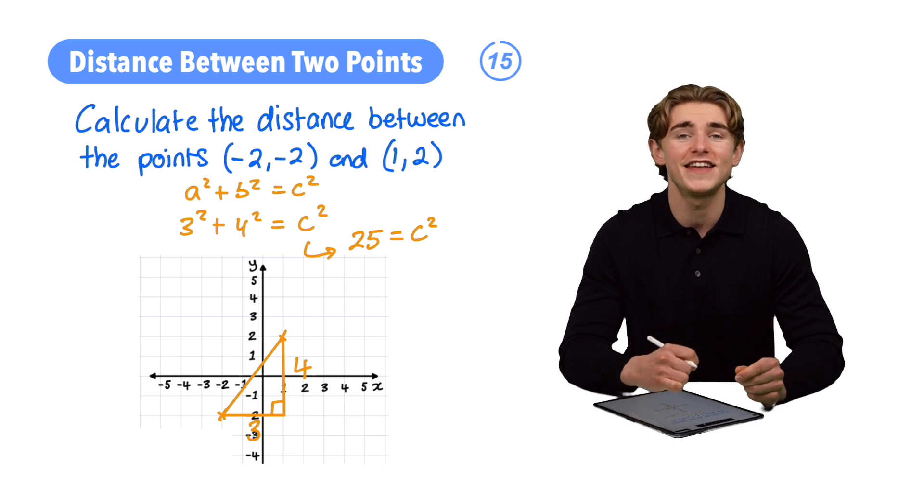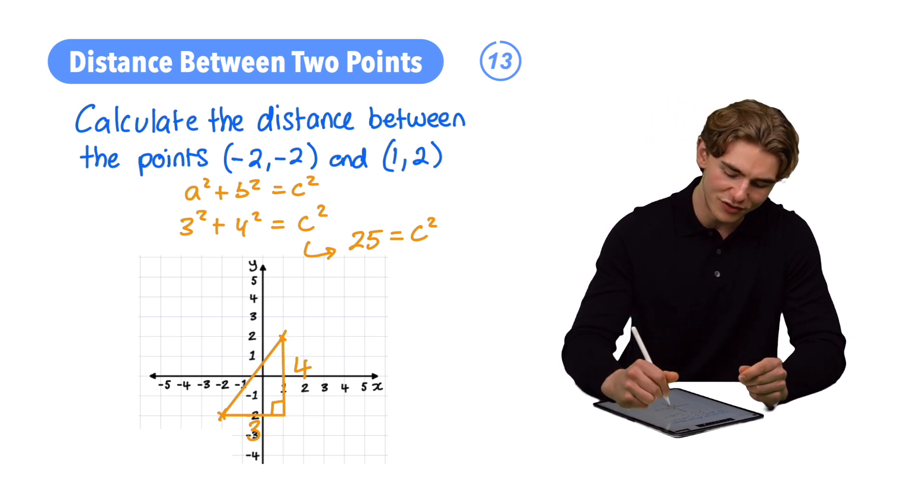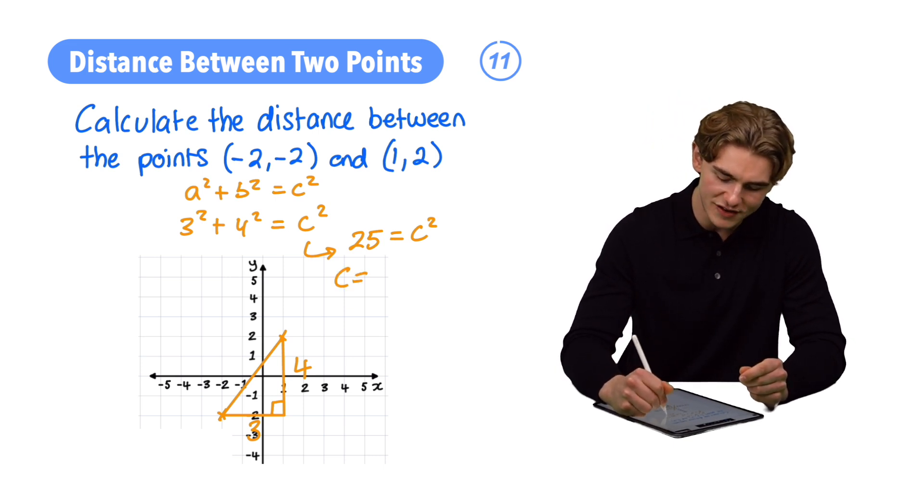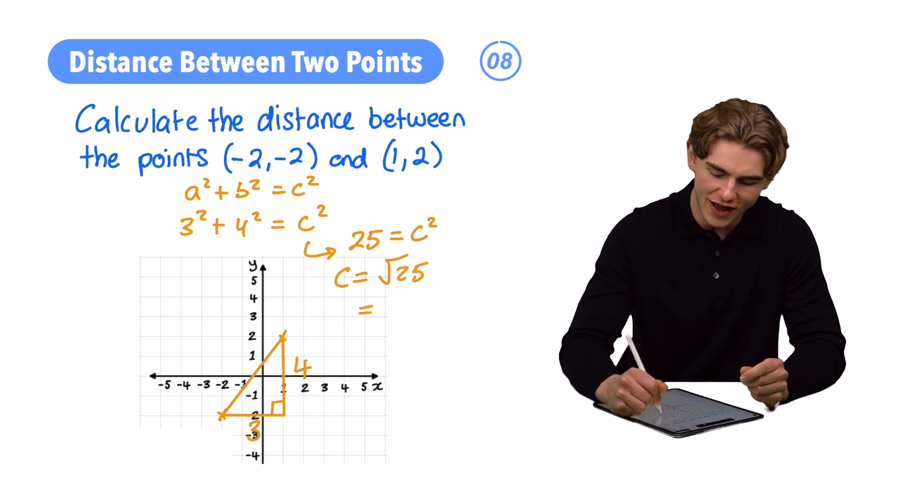To find the value of c, our hypotenuse, we can square root both sides. We get that c equals the square root of 25, which is 5.